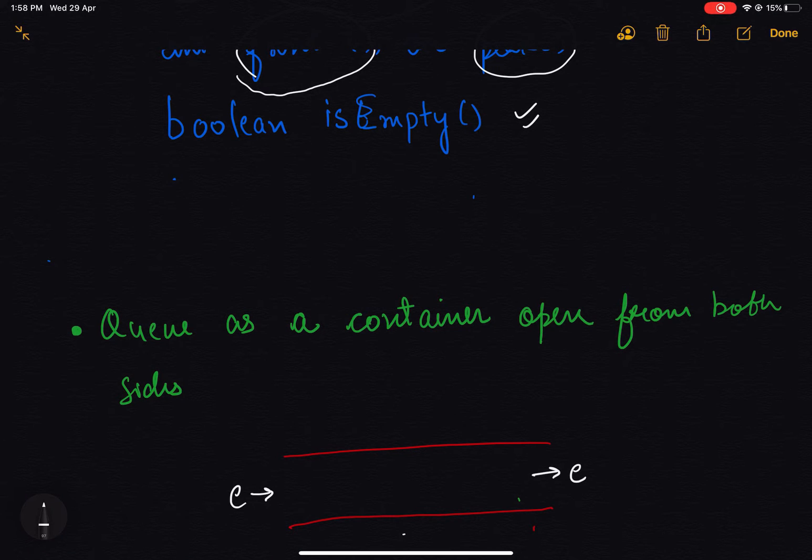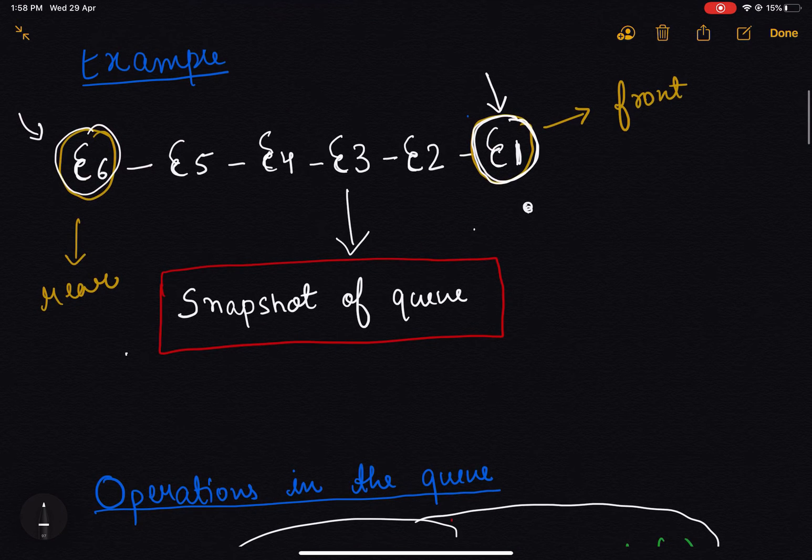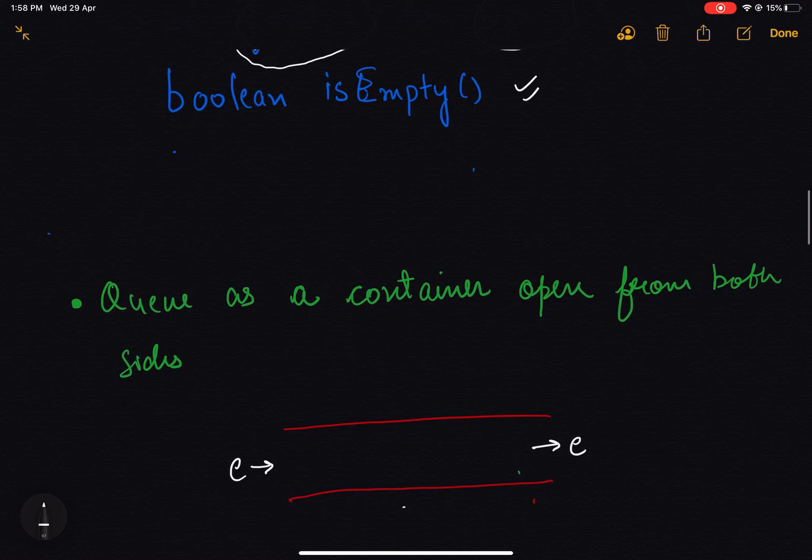As we have seen, the operations can be enqueue, dequeue, front, and isEmpty. We can also say a queue is a container which is open from both ends. We are entering an element from one side and removing an element from the other side.